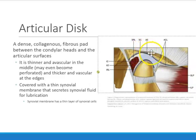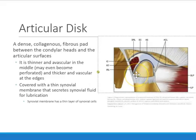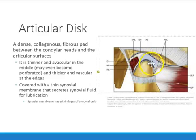Around the articular disc there is a membrane called the synovial membrane. The synovial membrane secretes fluid — synovial fluid — around the articular disc. This is beneficial because the fluid helps lubricate the bones and aids movement. When we're opening and closing and activating our TMJ, we want it to be lubricated. A thin layer of synovial cells secretes this synovial fluid for lubrication.